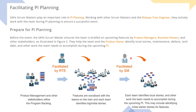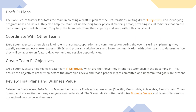This picture clearly tells you what areas the Release Train Engineer is helping in facilitation and what areas the Scrum Master is facilitating. The RTE helps in product management and refining the program backlog. Features are socialized with the teams on the train, and each team identifies the initial stories. Each team also identifies the local stories and other work they need to accomplish during the upcoming PI, including identifying the initial starter stories for features.